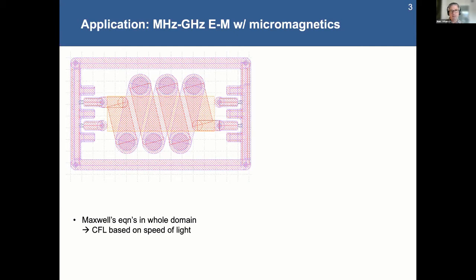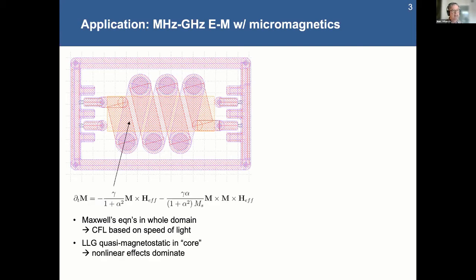And so generally, when you treat these explicitly, your CFL condition, or even implicitly for the purposes of calculating accuracy, is based on the speed of light, which, as we all know, is pretty fast.